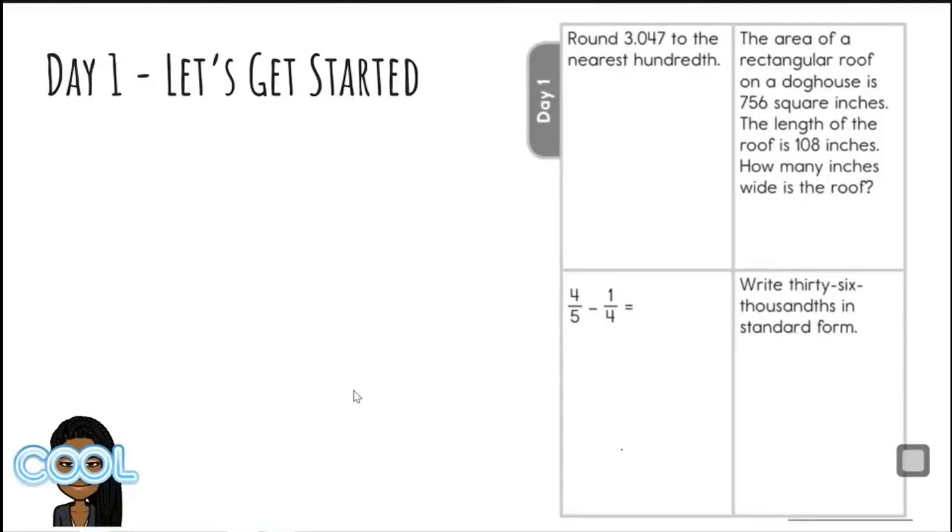Looking at question number one, it says to round three and 47 thousandths to the nearest hundredth. First thing we need to do, I'm going to underline some important information. It says to the nearest hundredth and it says to round. We're going to round this number here to the nearest hundredth.